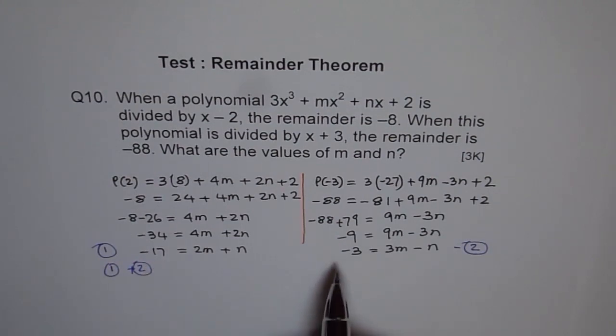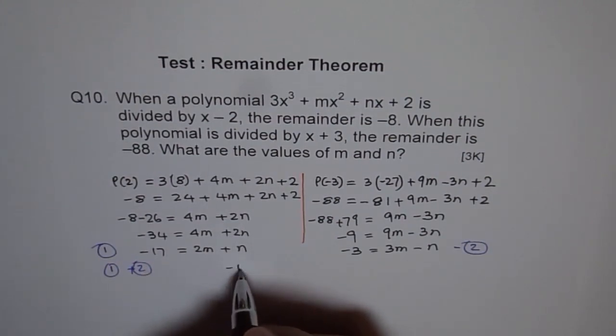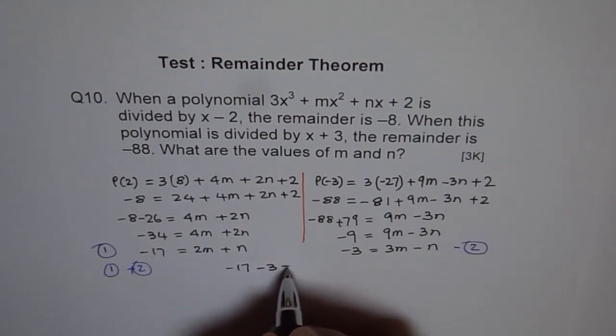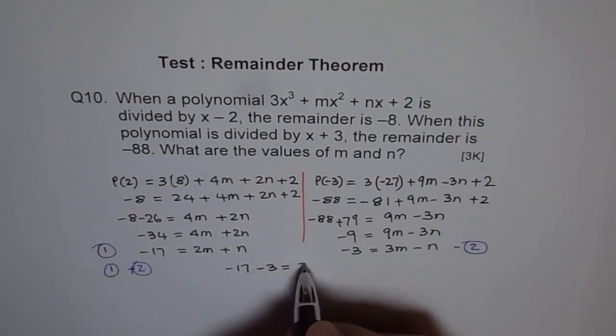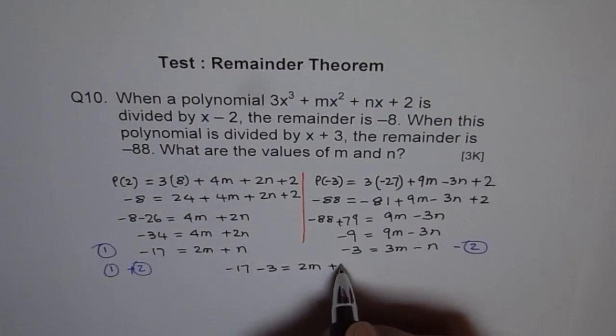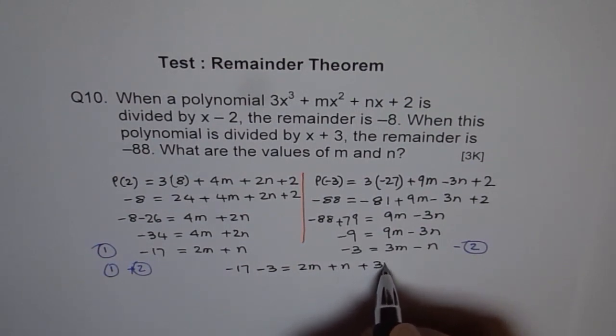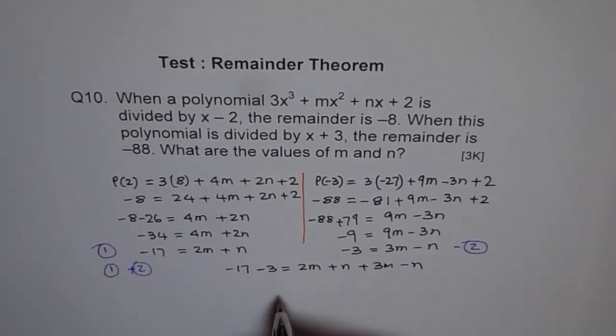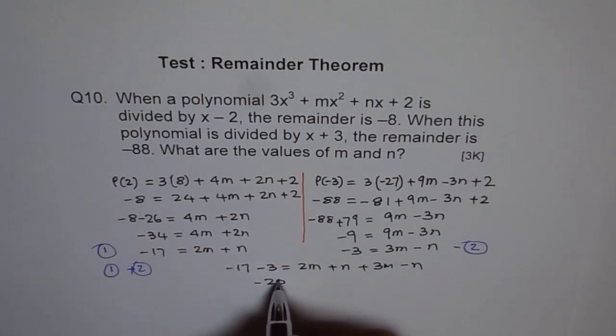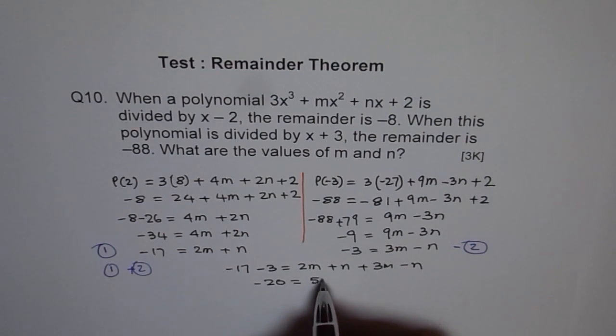So -17 and let me write this. -17 - 3 equals 2m + n + 3m - n. So we get -20 equals 5m. And therefore, m equals -4. Perfect.